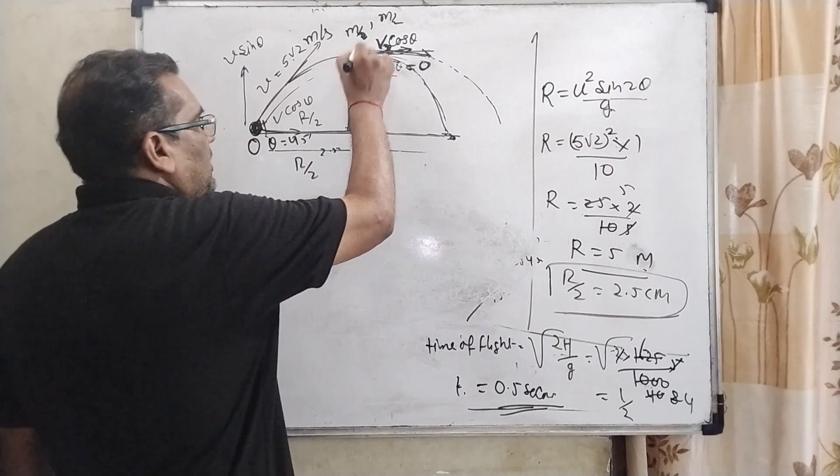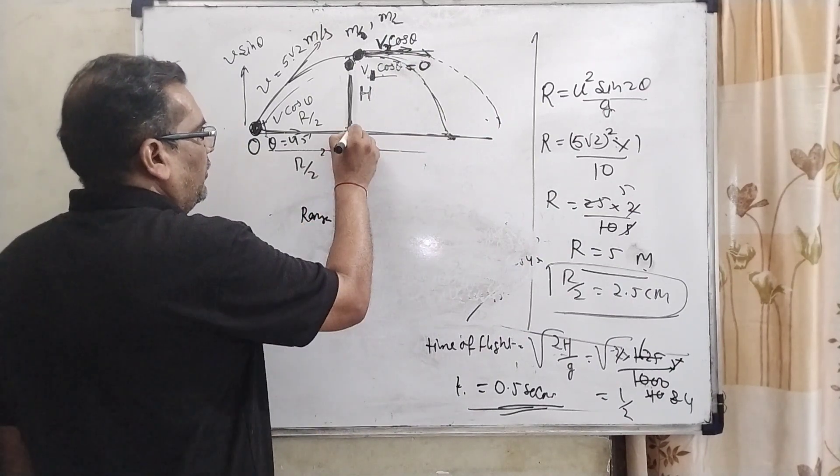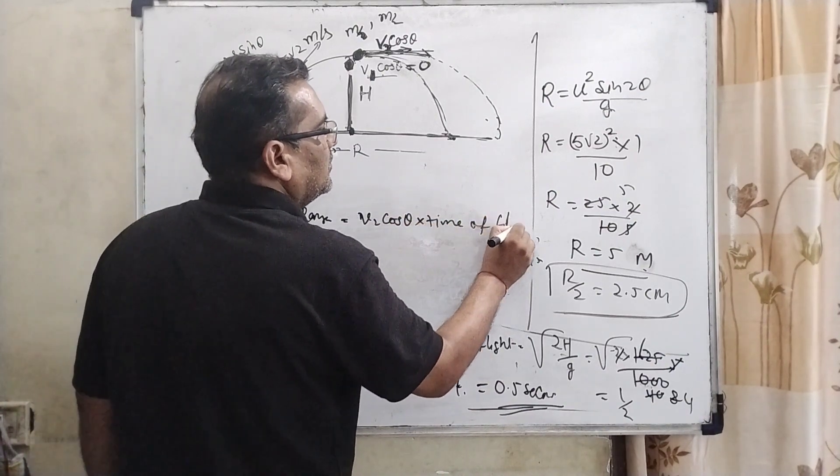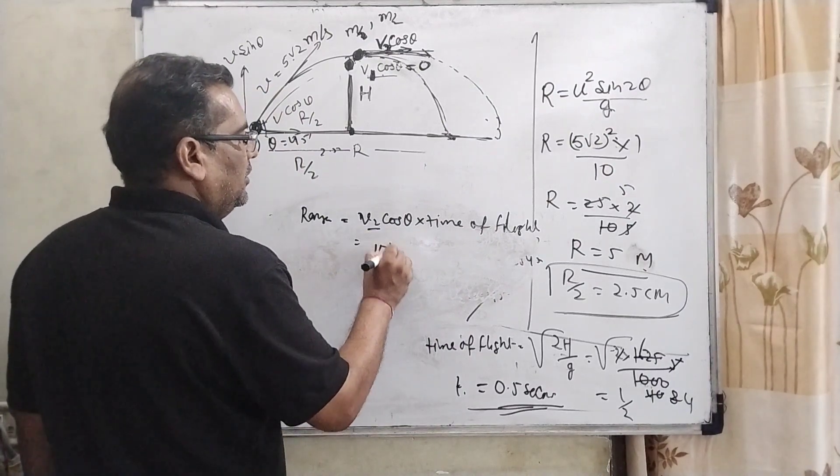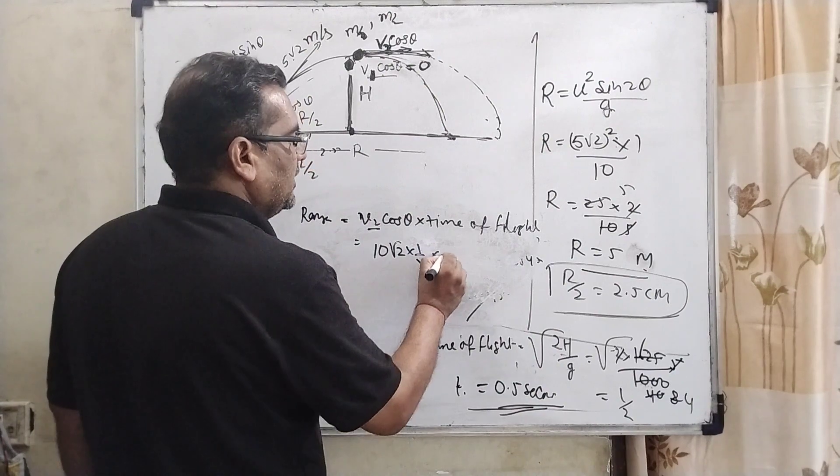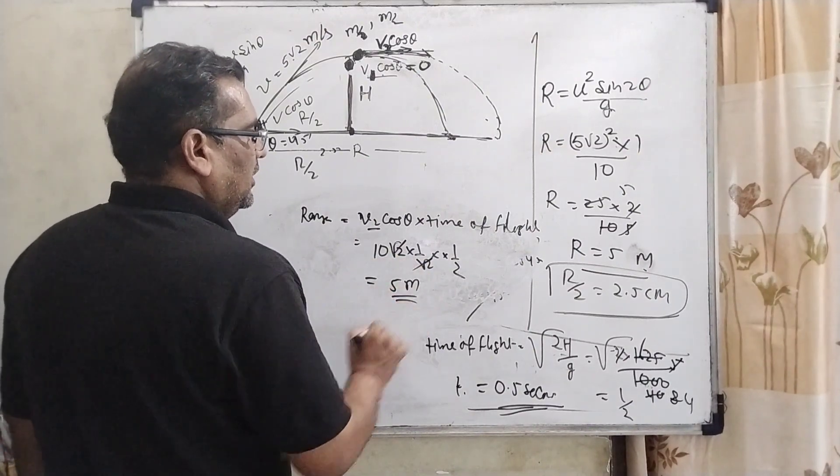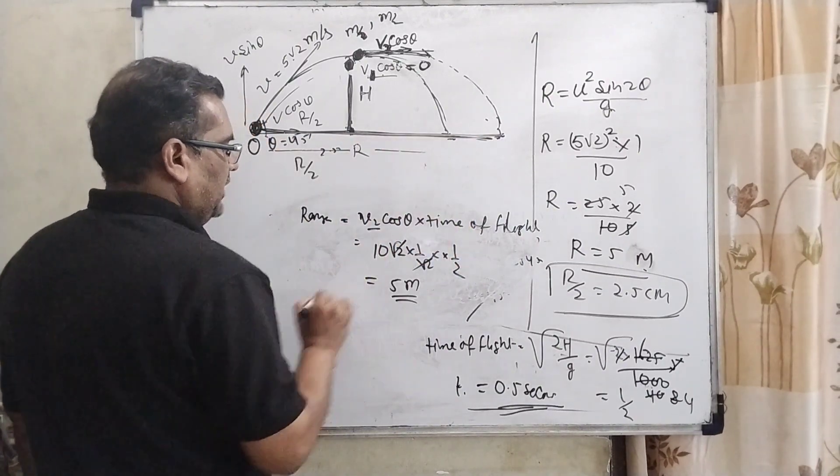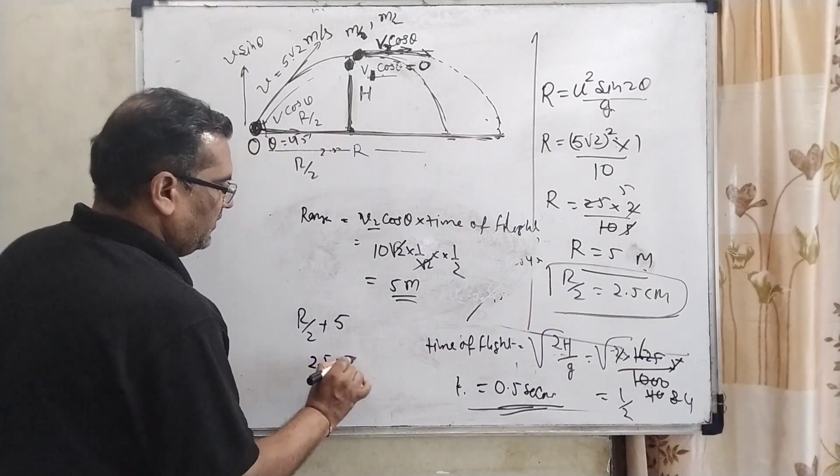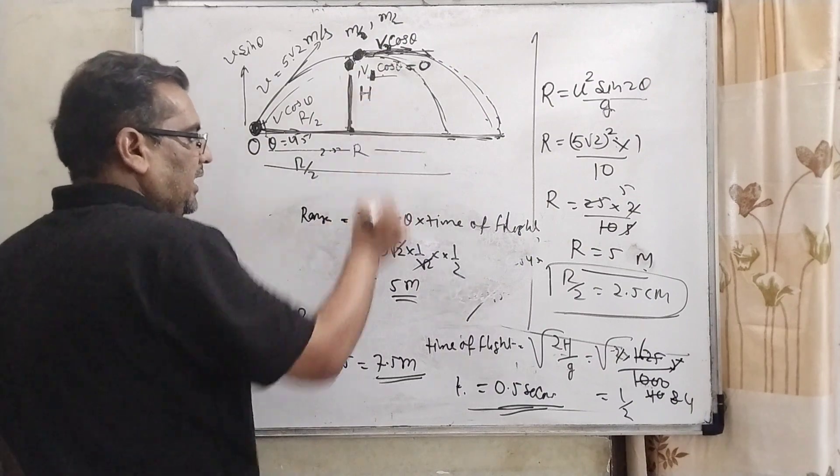Now for the second particle, the second particle is traveling and covers the range. The range from maximum height to landing is V2 cos θ × time of flight. So V2 = 10√2 × cos 45 = (10√2) × (1/√2) × 0.5. √2 cancels out, 10/2 = 5 meters. Now total distance from O: that is R/2 plus this distance of 5 meters. R/2 = 2.5, plus 5 equals 7.5 meters. So the second particle covers the range of 7.5 meters and time taken is 0.5 seconds.